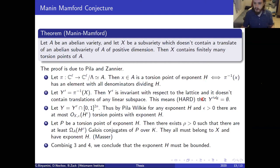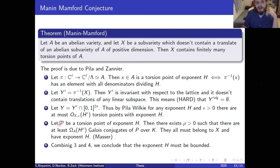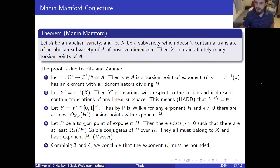Thank you very much. A small correction: the result attributed to Masser is actually first due to David. Masser proved that p will have large degree over ℚ, but David first proved it and proved a sharp form; Masser proved a slightly less sharp version — which is enough for the argument — possibly independently but slightly later. People usually refer to it as the result of David.